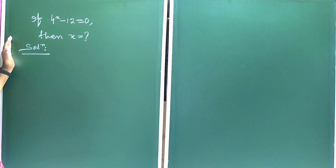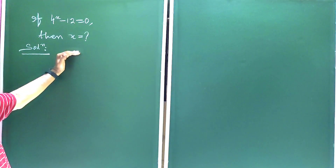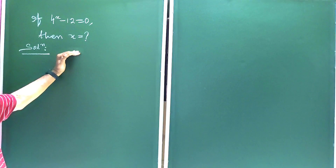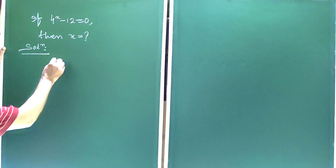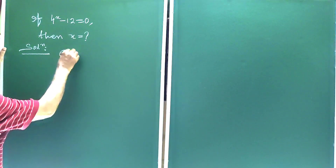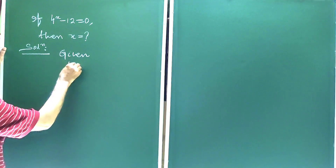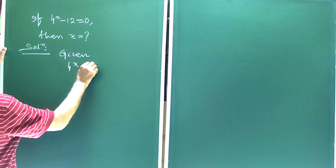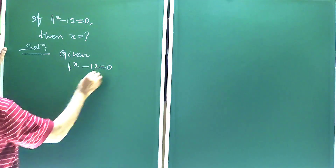Here the question is: if 4 to the power x minus 12 is equal to 0, then what is the value of x? So given, 4 to the power x minus 12 is equal to 0.